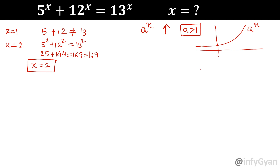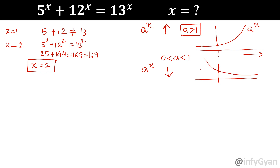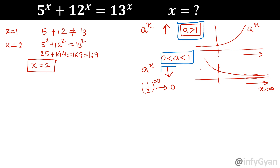So the function will be increasing once you increase the value of x. Once the value of a is in between 0 and 1 — a fractional value — then a raised to the power x would be a monotonic decreasing function. Suppose a is one-half and x tends to infinity: one-half to the power infinity tends to 0, so the graph comes close to the x-axis. So this depends on the value of a: if a is greater than 1 the function is monotonic increasing, and if a lies between 0 and 1 the function is monotonic decreasing. These two points are important.